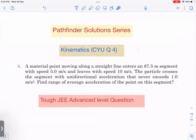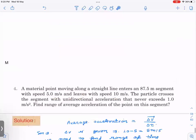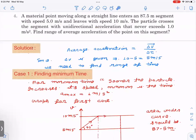As far as JEE Advanced level is concerned, this is a tough question. Let us see how we solve this. Here, the concept is the average acceleration formula is delta v by delta t. Here, delta v is already given: delta v is 10 minus 5, which is 5 meters per second. Since we have to find out the range of average acceleration, there has to be a range on time. So we need to find out the range of time - there will be a minimum time and a maximum time.